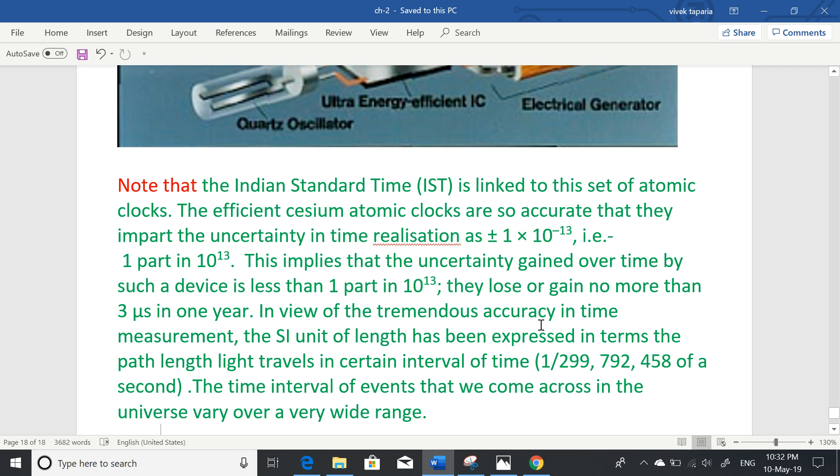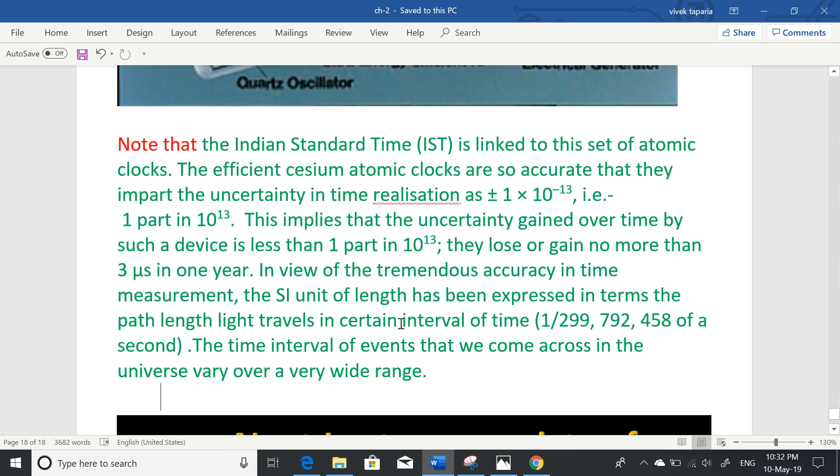In view of the tremendous accuracy in time measurement, the SI unit of length has been expressed in terms of the path length light travels in certain interval of time. On the basis of this accurate standard we define 1/299,792,458 part of a second, the distance light travels is 1 meter.